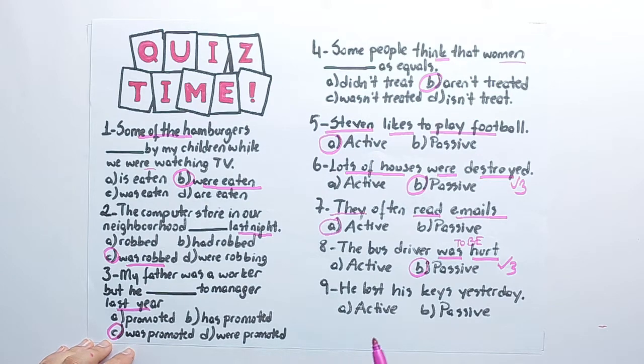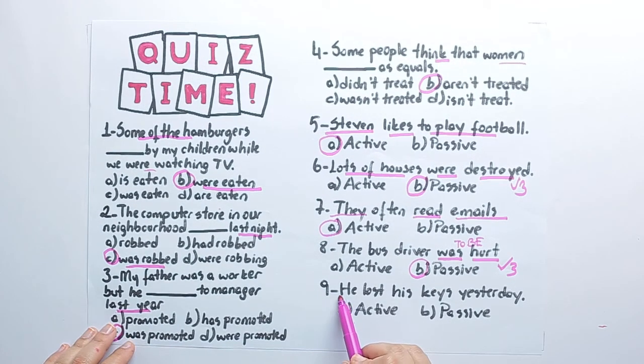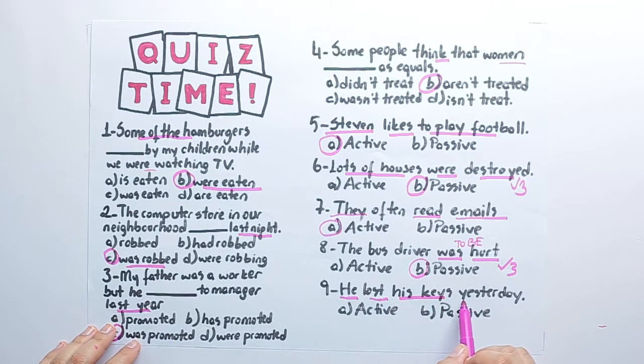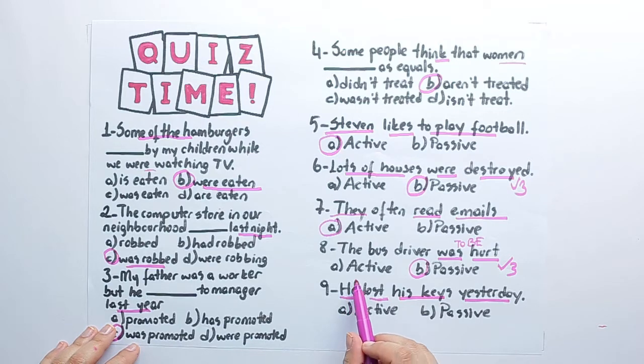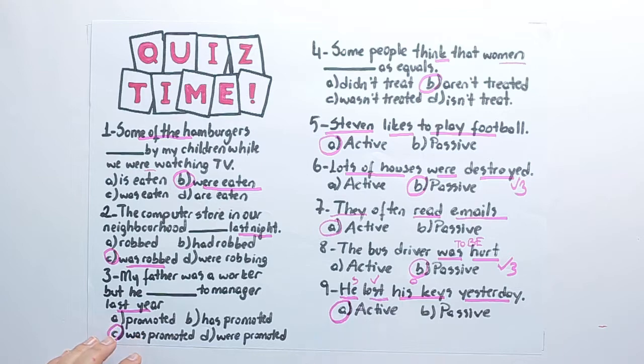And the last one, he lost his keys yesterday, subject verb object, so it is an active sentence.